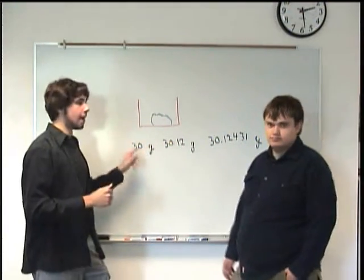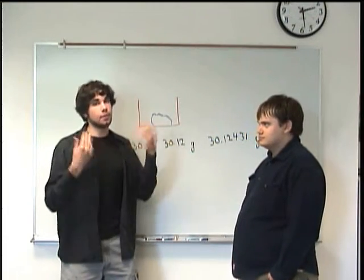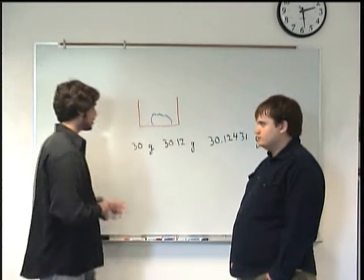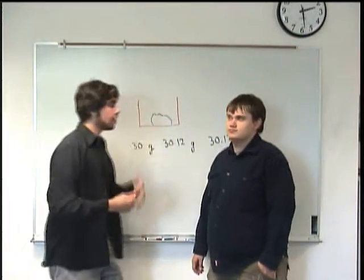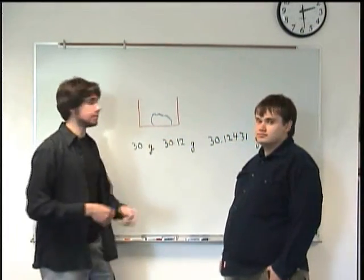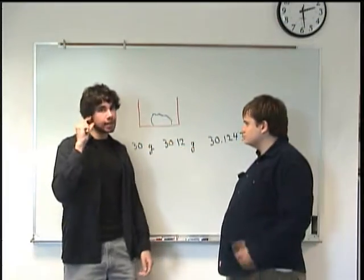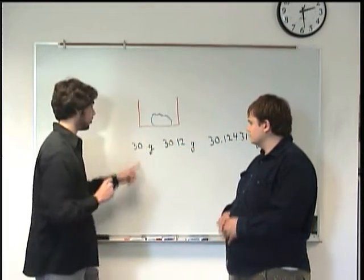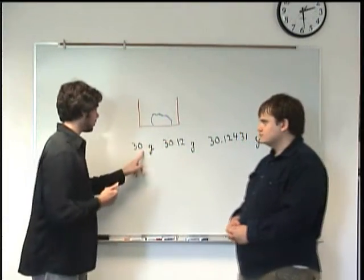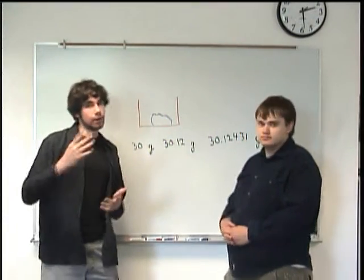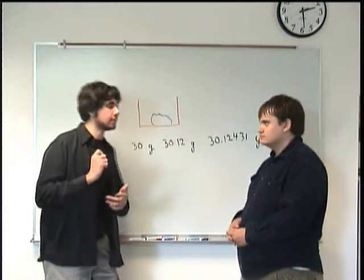So that's why this one is only one significant figure. The three is significant. When you think about it, that makes sense. When we weigh this, there's a little tiny itty-bitty difference. It's 30, 30.12, 30.12431. So the zero right here isn't exactly significant. It could vary a little bit. That's where the precision comes in. Makes sense. So here, since this is a decimal point, we have the 30 point.